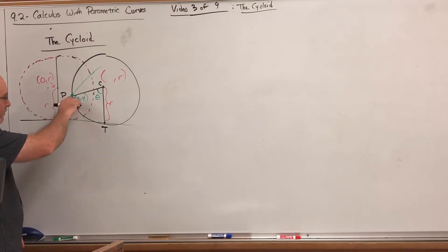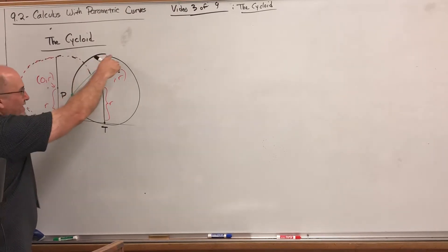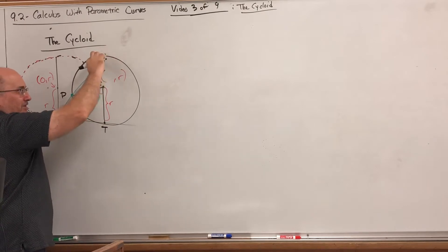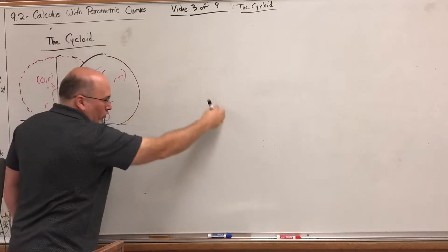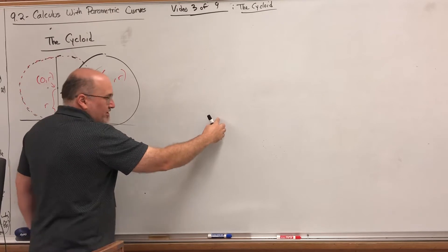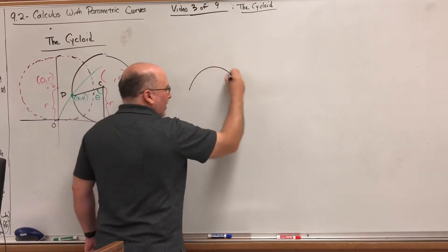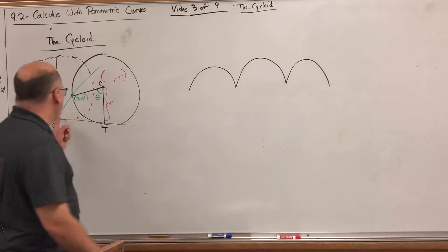As we roll this circle forward in the positive direction along the x-axis, you can imagine that this point is going to come off the ground, eventually peak—in fact we know how high it'll get, to the top—and at some point it's going to roll back down again, then it's going to go back up.